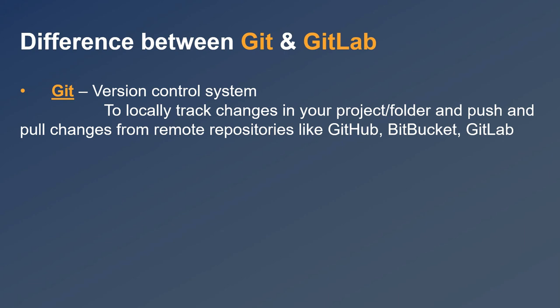So Git is a version control system used to locally track changes in our project and also to push and pull changes to remote repositories like GitHub, Bitbucket, and GitLab.